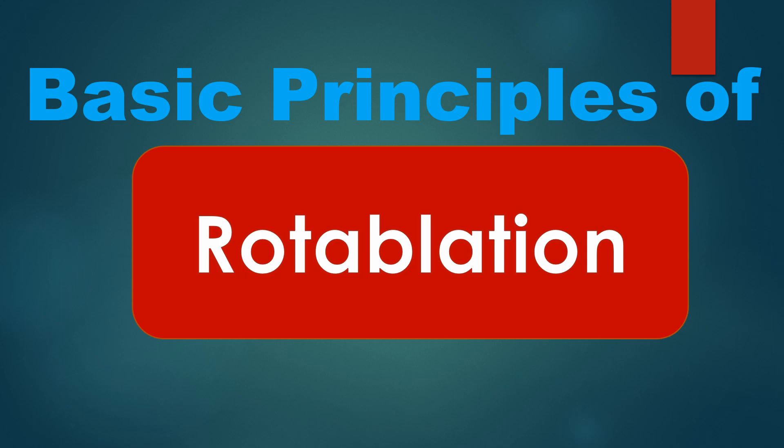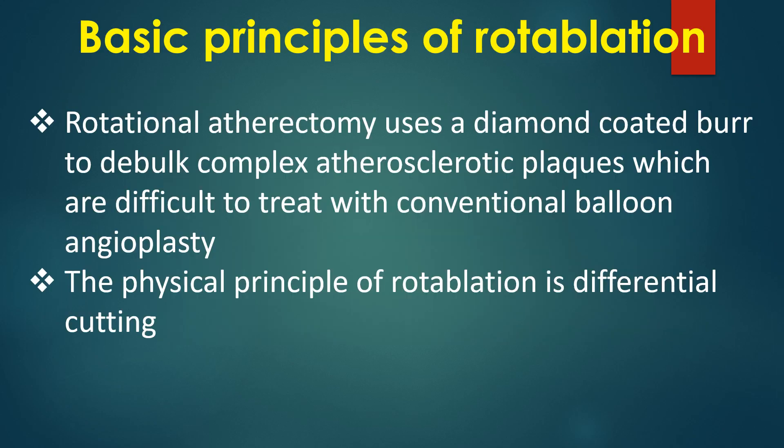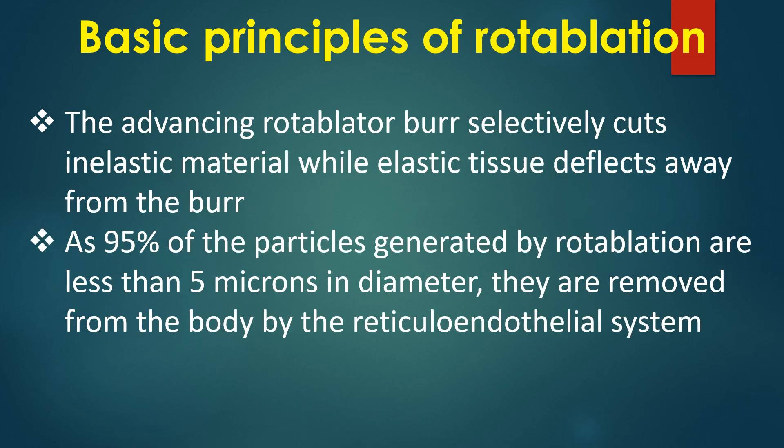Discussion on basic principles of rotablation or rotational atherectomy. Rotational atherectomy uses a diamond-coated burr to debulk complex atherosclerotic plaques which are difficult to treat with conventional balloon angioplasty. The physical principle of rotablation is differential cutting: the advancing rotablator burr selectively cuts inelastic material while elastic tissue deflects away from the burr.